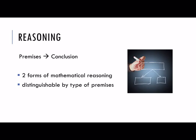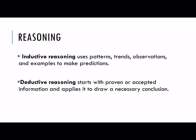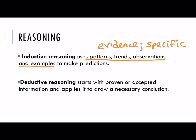So let's recap. We have two different types of mathematical reasoning, and we can tell the difference between them by looking at the types of information we begin with and the type of conclusion we come to. Inductive reasoning uses patterns, trends, observations, and examples to make predictions. So the premises or the starting information would be these patterns, trends, observations, and examples — we're looking at special cases. And then here is our conclusion: we're making predictions about what would happen in a general case. So in an inductive argument we are gathering evidence to give strength to a general conclusion that would happen all the time.